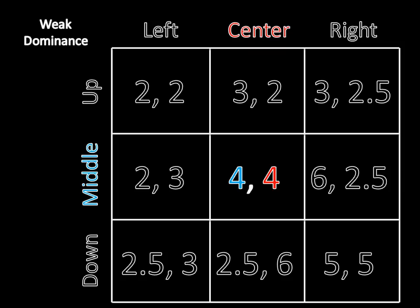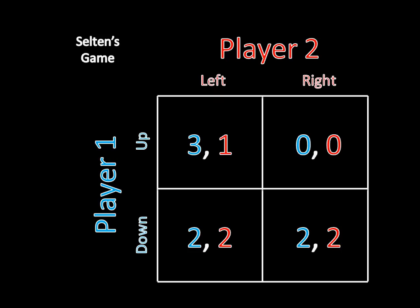So you might think that's great and we can use weak dominance just like we did strict dominance. But that's actually not the case. And we now turn to this game, it's called Selton's Game, to see why. And I'm using this one because we'll come back to it later when we get to extensive form games and sub-game Perfect Equilibrium. So it'll be good to have practice with it beforehand.